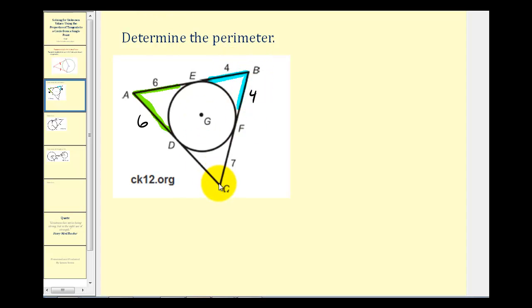And then considering point C, segment CF is congruent to segment CD. Therefore segment CD must have a length of seven units. So now we just need to add the lengths of all of these segments.